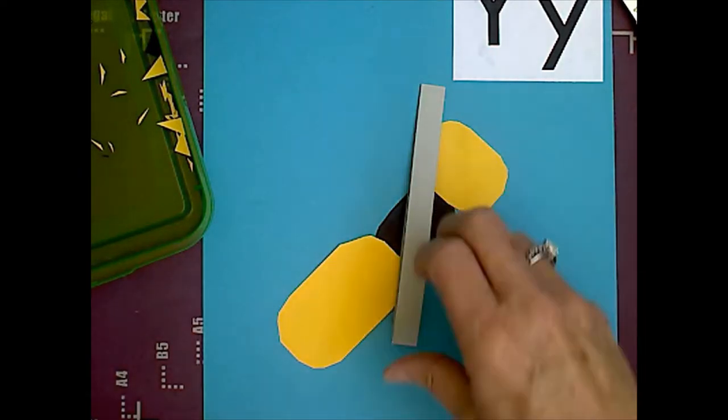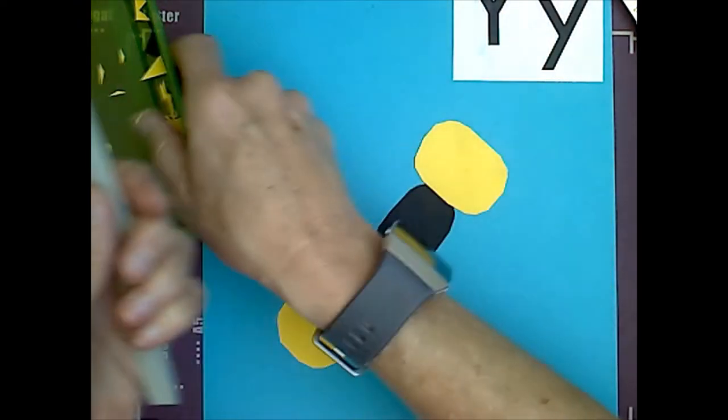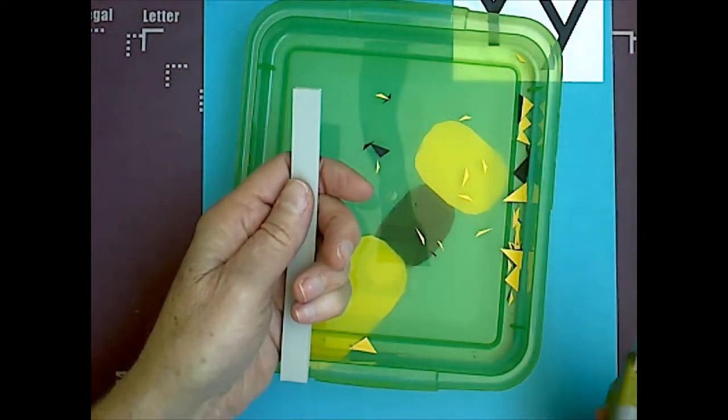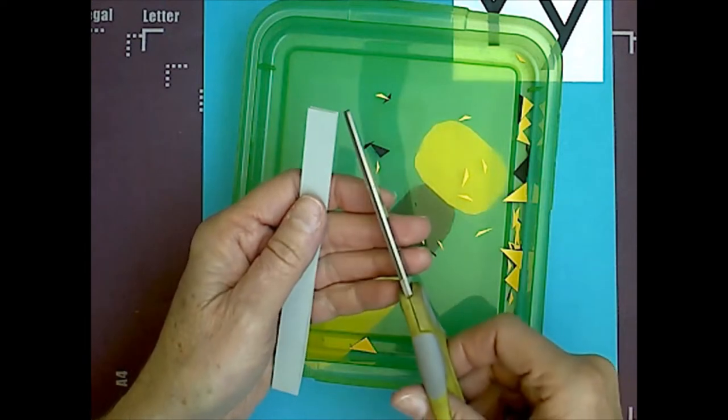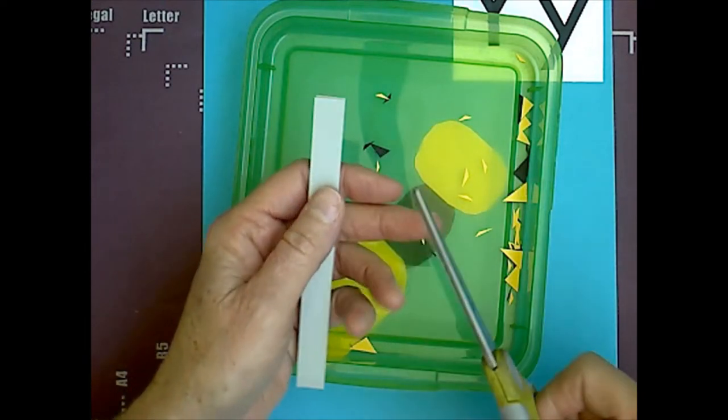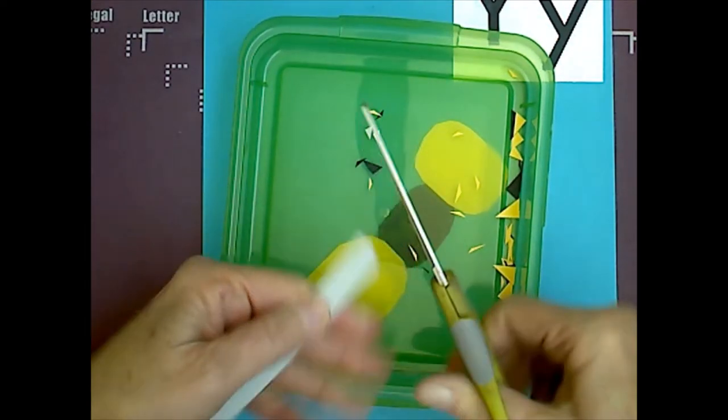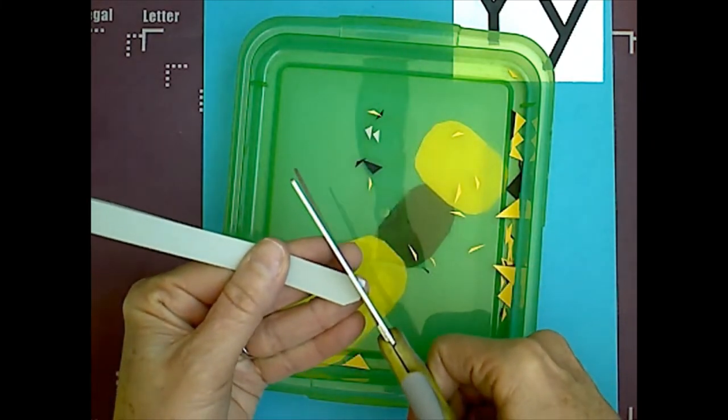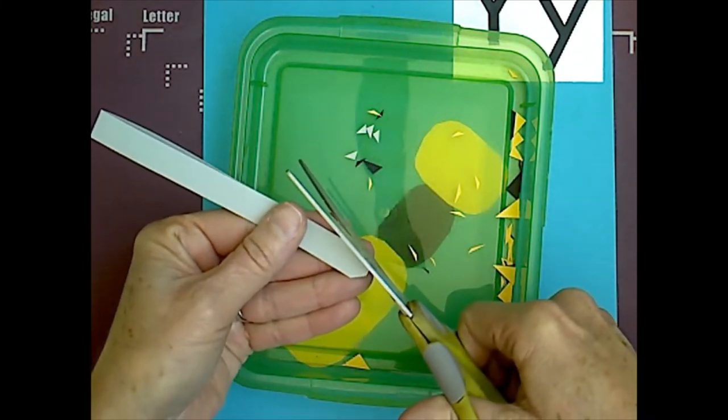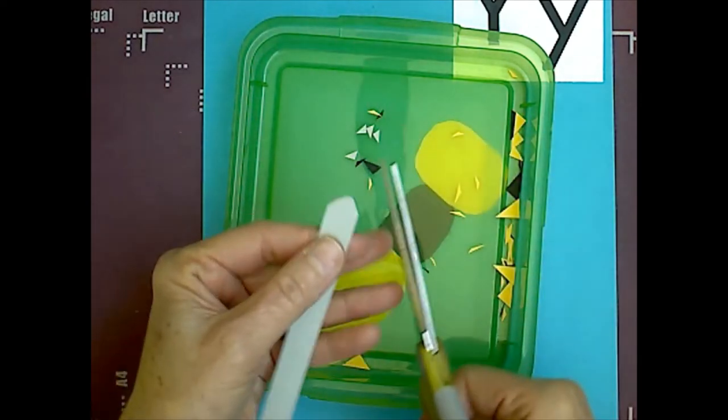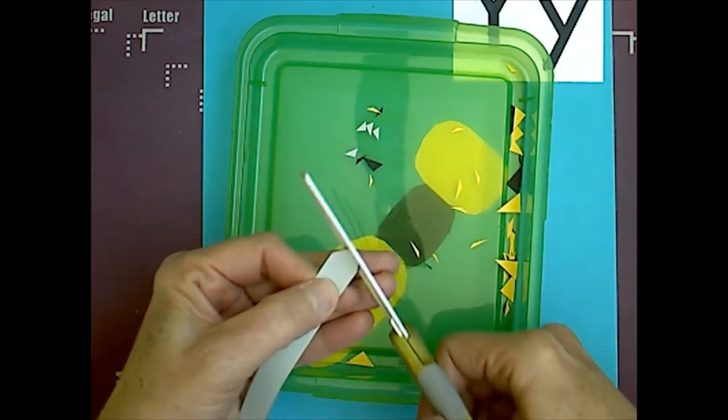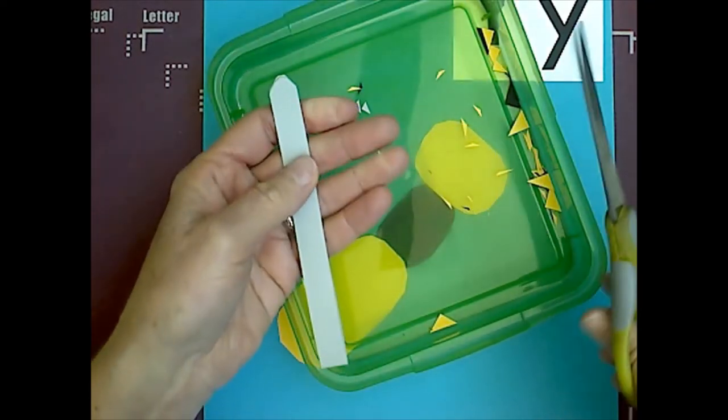Fold it in half, and then we're going to take two corners, and we're going to cut those two corners, and magic cut it.